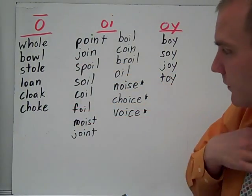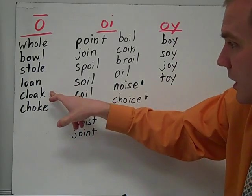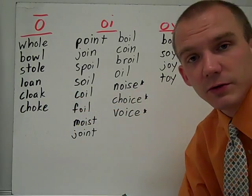Some words you might have trouble on. Choking, like if you're gagging on something and can't breathe. Cloak is like a cape you wear to kind of cover yourself.